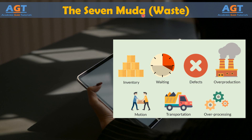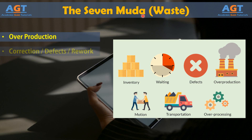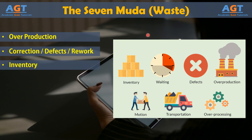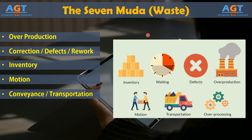there are seven wastes, or seven Muda — resources that are commonly misused and mismanaged: overproduction, correction or rework, inventory, motion, conveyance, overprocessing, and waiting.